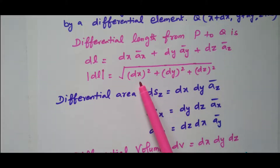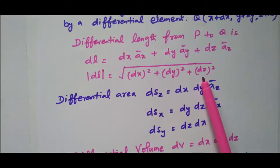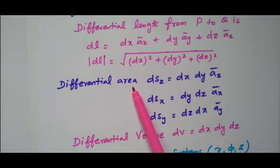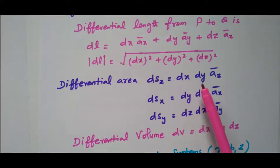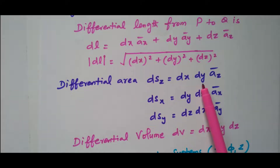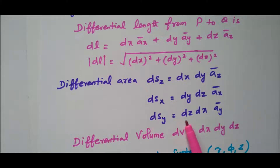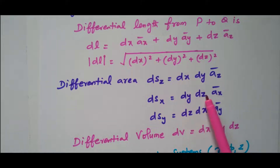Taking the modulus, the magnitude of dL is the square root of dx² + dy² + dz². That we know very well. While calculating differential area, we need to consider any two elements — either x and y, or y and z, or z and x. So: dSz = dx·dy·az, dSx = dy·dz·ax, and dSy = dz·dx·ay. For area, we multiply only two parameters.